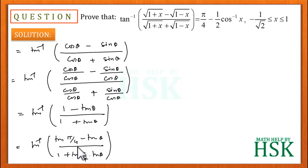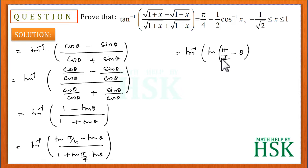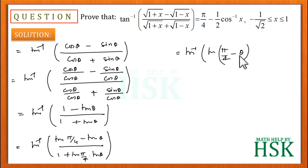So the expression becomes tan pi by 4 minus tan theta upon 1 plus tan pi by 4 into tan theta. Applying the formula for tan of A minus B, which is tan A minus tan B upon 1 plus tan A tan B, this can be written as tan of pi by 4 minus theta. Therefore, the result gives pi by 4 minus theta.